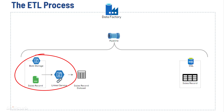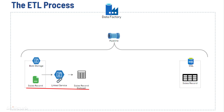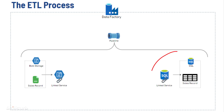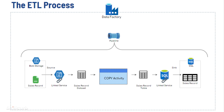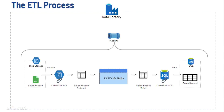First we create a linked service for the blob storage, using which you can access the CSV file inside the blob storage. The CSV file will produce the source dataset, which is a named view of data that simply points to or references the data you want to use in your activities as inputs. On the other side, we will also create a linked service that will connect to the SQL database table, and with that linked service we will be able to get the table information created inside the database. Finally we will have the copy activity, which will be responsible to copy the dataset files from the CSV inside the blob storage into the database table in SQL database.